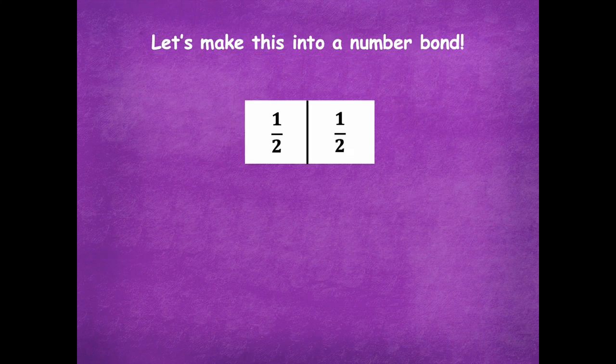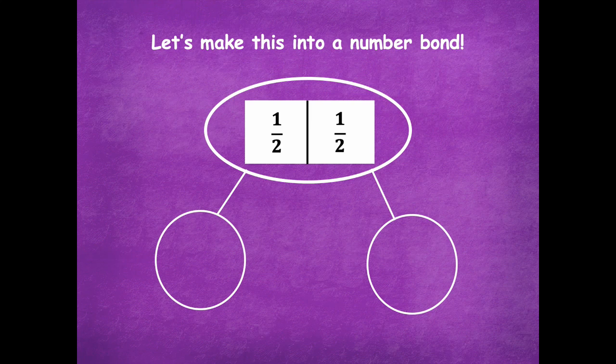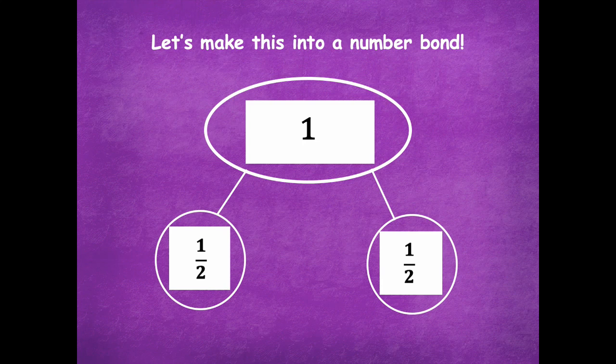Let's make this into a number bond. Here I'm going to draw a circle to represent one whole, because that's my whole, and then I have two parts. I'm going to take my fractional unit and move it down into one part of my number bond, and I'm going to take my other half and move it right down to my number bond. This represents one whole — we have two halves to make one whole. I'm going to leave this up in the corner for us to reference.